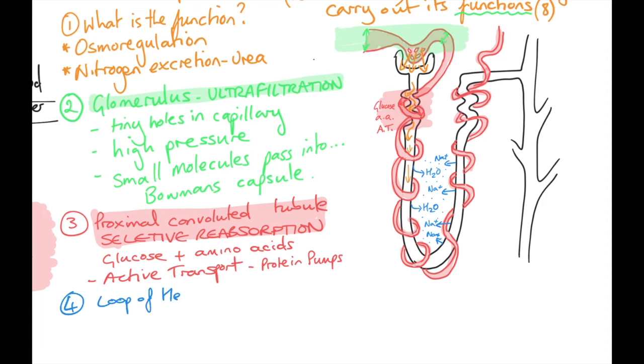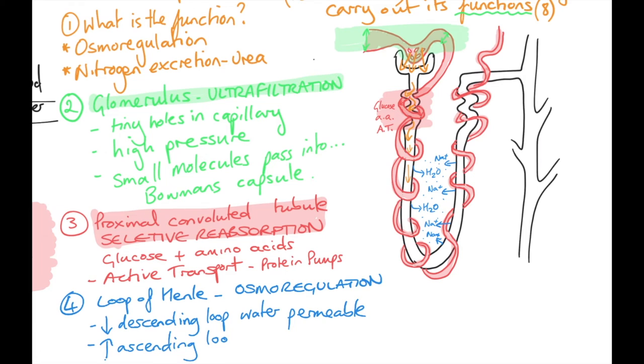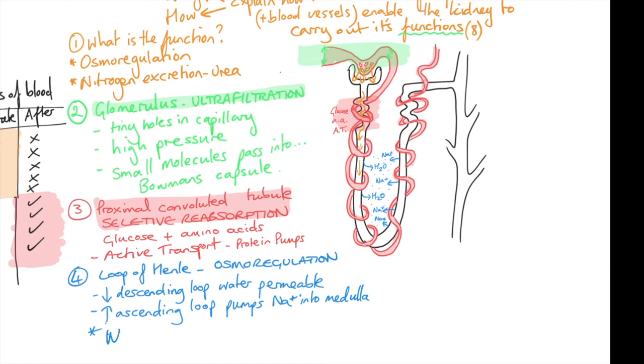So to recap, the loop of Henle is involved in osmoregulation. The descending loop is permeable to water and the ascending loop pumps sodium actively, creating a hypertonic medulla. This means that water will flow out of the nephron into the medulla by osmosis. So this area is involved in osmoregulation.